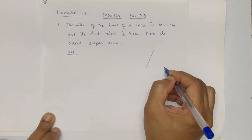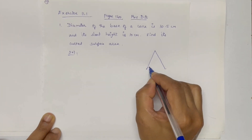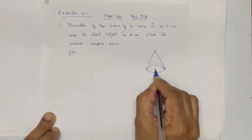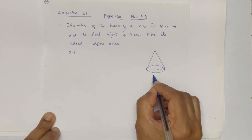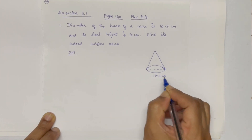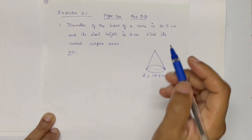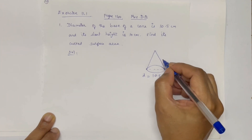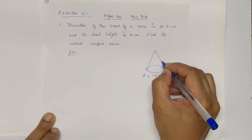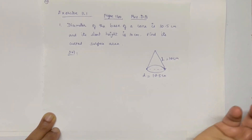For this cone, the diameter is 10.5 cm and the slant height l is equal to 10 cm.